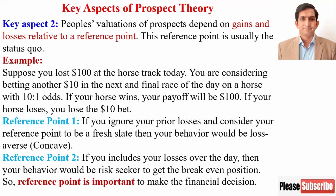The second key aspect of prospect theory says that people's valuation of a prospect depends on gains and losses relative to a reference point. For example, suppose you lost $100 at the horse track today, and now there is a next race with a ratio of 10-to-1. If your horse wins, you will get $100, and if your horse loses, you will lose $10. If you think you have no loss, that is your reference point, and you will not take the risk.